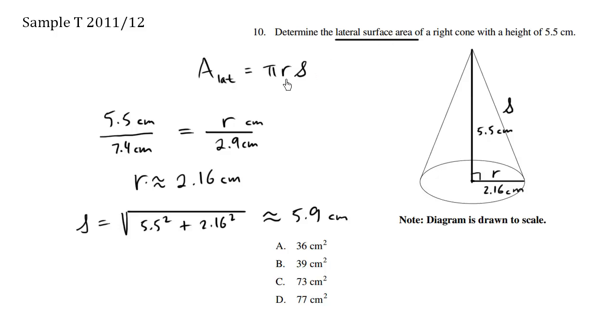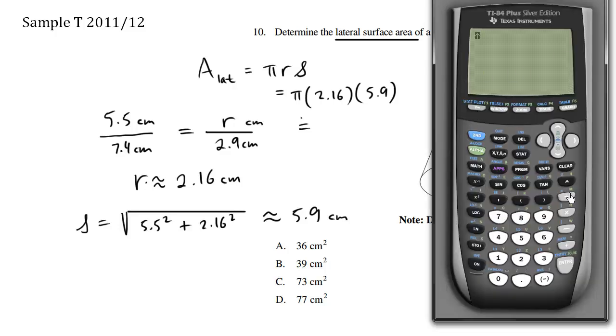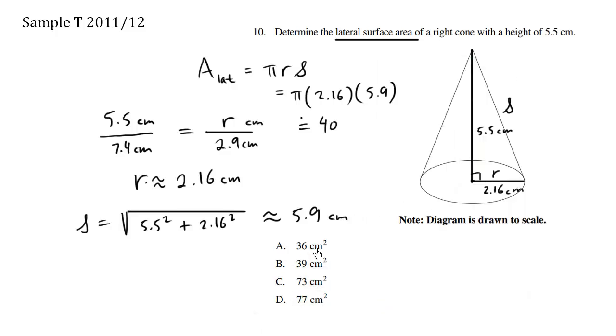So we go back to our original question. The lateral surface area is pi r s, which is approximately equals to pi times 2.16 times 5.9, which gives us a final approximate answer of 40. So the final answer is approximately 40, and the closest answer we have is choice B. And the reason why we were off by a bit is because we're using an actual physical ruler, and there's always some measurement errors.